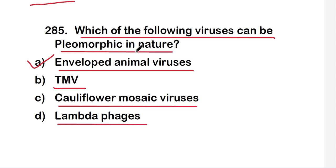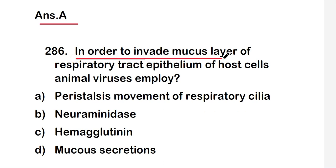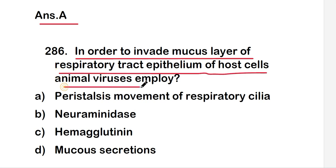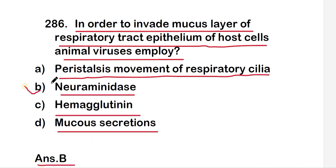Next question: in order to invade the mucous layer of respiratory tract epithelium of host cells, animal viruses employ peristalsis movement of respiratory cilia, neuraminidase, hemagglutinin, or mucous secretions? The right answer is option B, neuraminidase. Animal viruses employ neuraminidase to invade the mucous layer of respiratory tract epithelium of host cells.